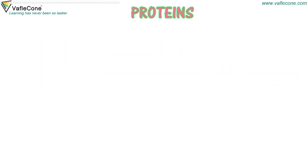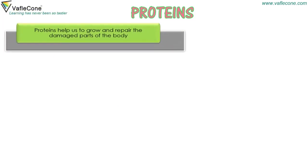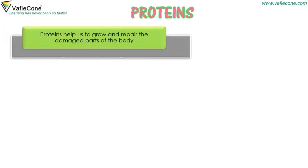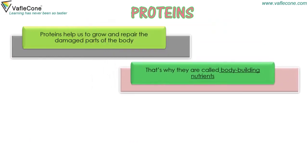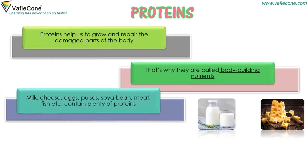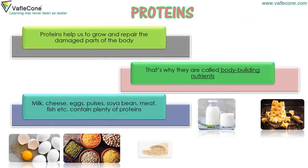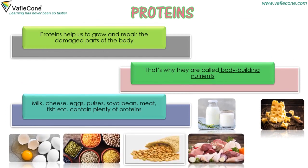Proteins help us to grow and repair the damaged parts of the body. That's why they are called body-building nutrients. Milk, cheese, eggs, pulses, soya bean, meat, fish, etc. contain plenty of proteins.